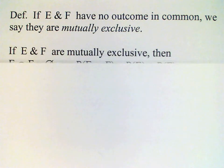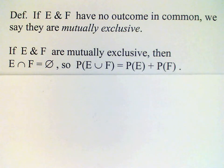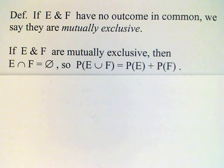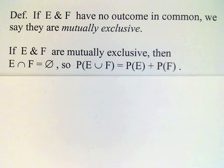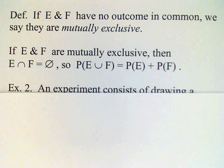In set terminology, that would mean that their intersection is empty. So in this special case, if the events E and F are mutually exclusive, the probability of their intersection is zero, and therefore we can get the probability of the union by adding the separate probabilities. But remember, this is only for the special case where E and F are mutually exclusive, or their intersection is zero.